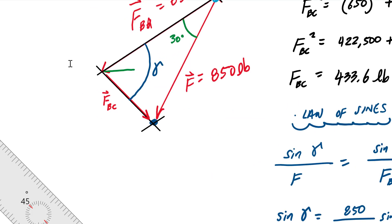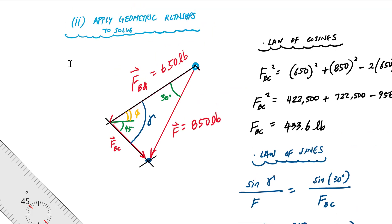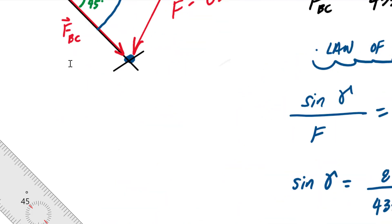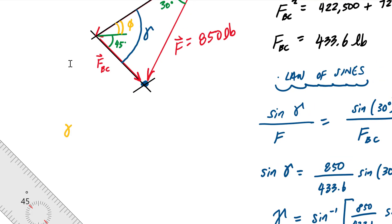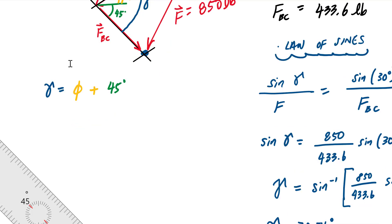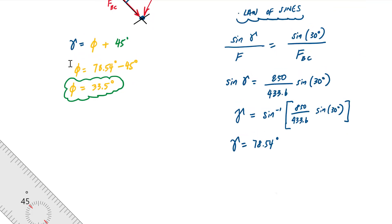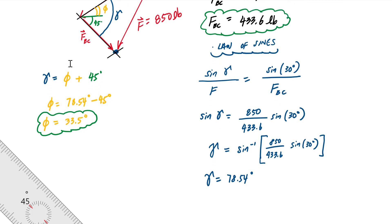The angle of F_BA relative to the horizontal is gamma, and F_BC is at 45 degrees relative to the horizontal. From the geometry, gamma equals phi plus 45 degrees. Therefore phi equals 78.54 minus 45, giving phi equals 33.5 degrees. That's the answer: phi is 33.5 degrees, and F_BC is 433.6 pounds.